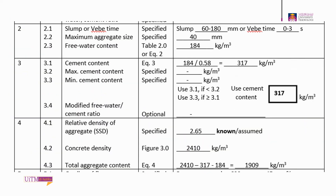Next is to obtain the cement content. Cement content equals free water content divided by free water to cement ratio. Using equation 3, free water content of 184 kg/m³ is divided by the free water to cement ratio of 0.58. There are no other restraints such as maximum or minimum cement content and no modified free water to cement ratio. Thus, the cement content is 317 kg/m³.